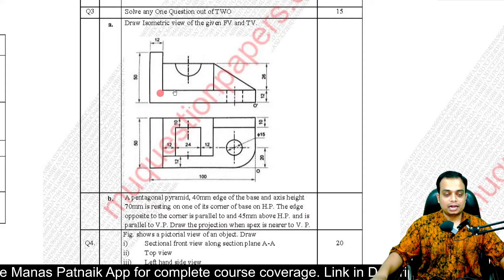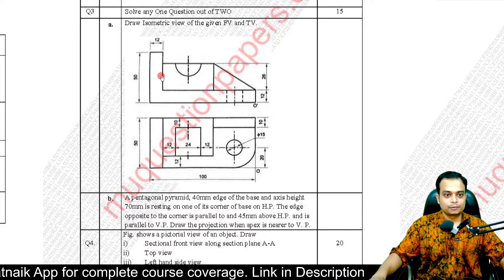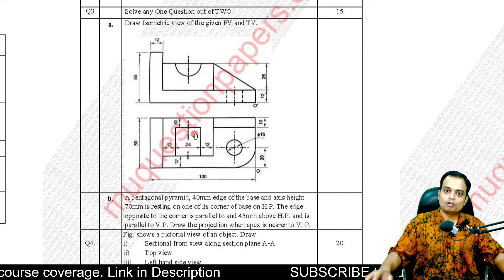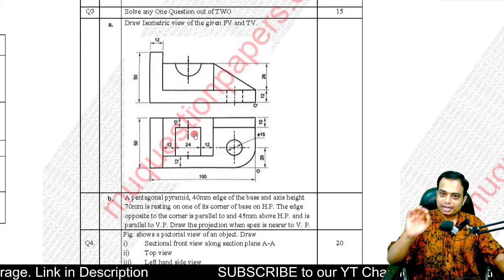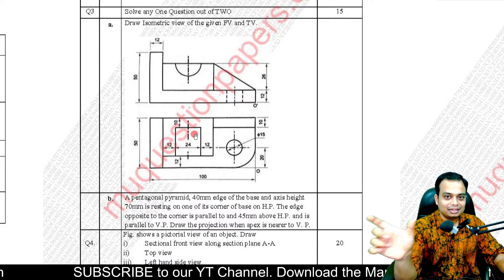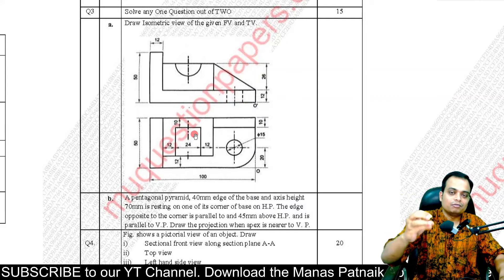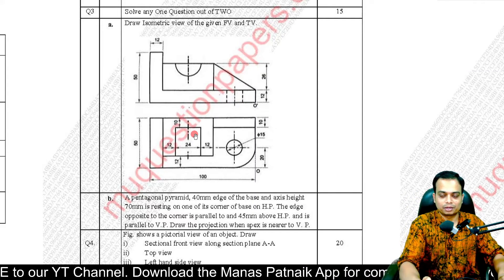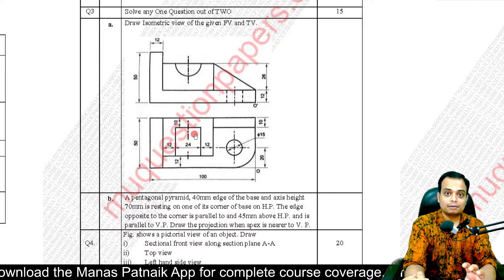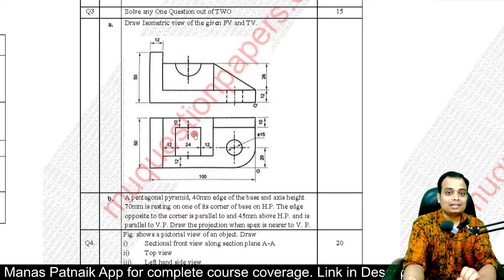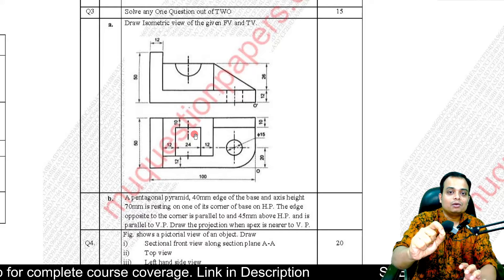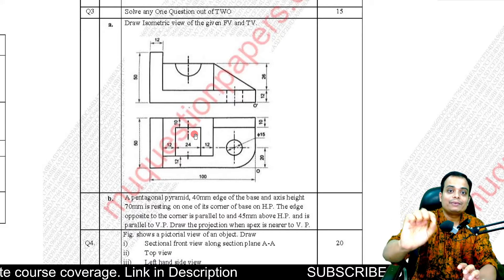Let's solve the isometric drawing problem first. Draw the isometric view of the given front and top views — we have been given the front and top view of a machine component and need to prepare the isometric view. That means the view where all the dimensions — length, width, and height — can be seen in a single view. It is constructed such that all three axes make an equal angle of 120 degrees with each other.